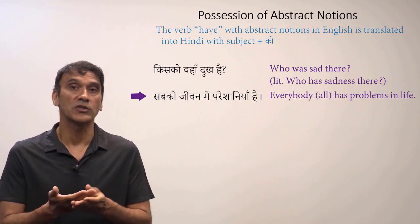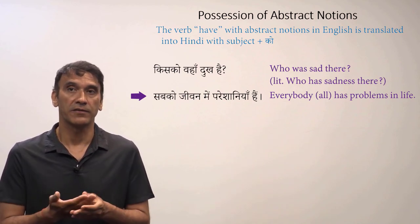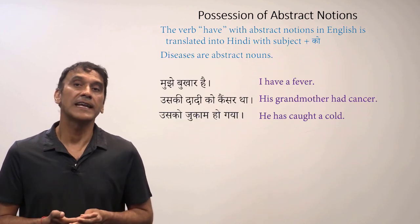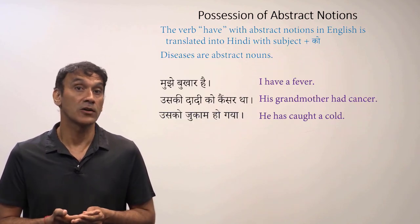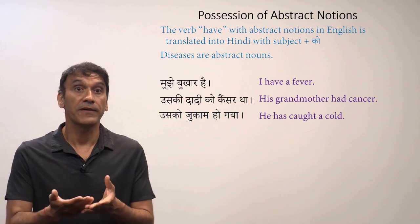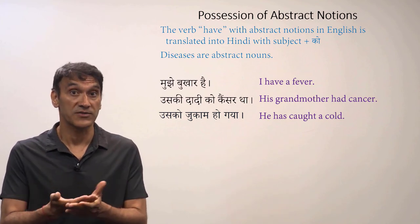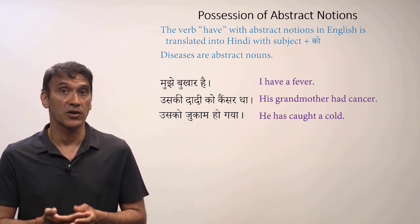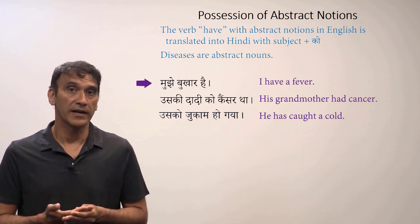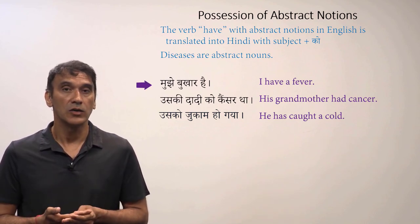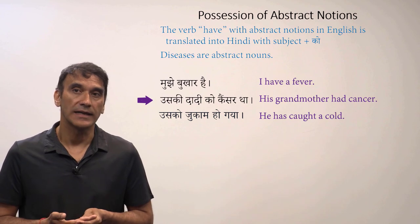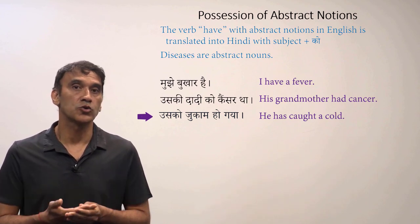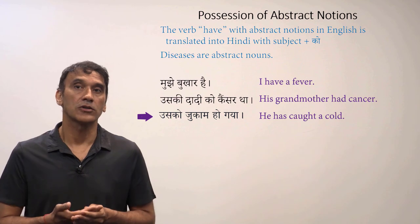'Sabko jiwan mein parishaniyan hai' — everybody has problems in life. The subject 'sab' goes with the postposition 'ko': 'sabko.' With illnesses and diseases, the subject also takes the postposition 'ko' — diseases and illnesses are also abstract nouns. 'Mujko bukhar hai' — I have a fever. 'Uski daadi ko cancer tha' — his grandmother had cancer. 'Usko jukam ho gaya' — he has caught a cold.